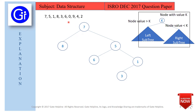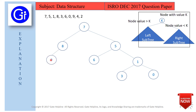Next is 0. Since 0 is less than 7, less than 5, and less than 1, we follow the right subtree path. Since 0 is less than 1, it goes to the right of 1. After that we have 9. Since 9 is greater than 7 and greater than 8, greater values go left, so 9 goes to the left of 8.